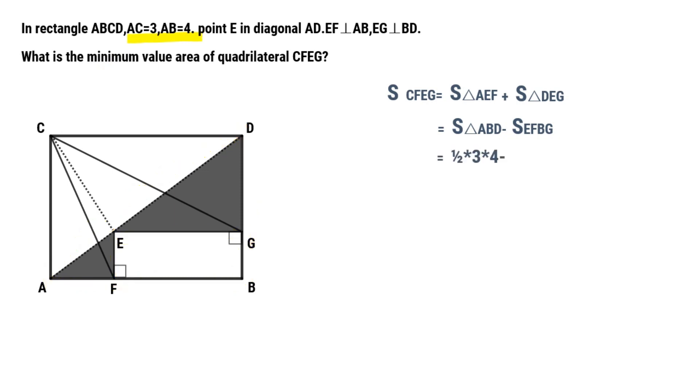We can calculate the area of triangle ABD is 6. The equation is 6 minus area of EFBG.